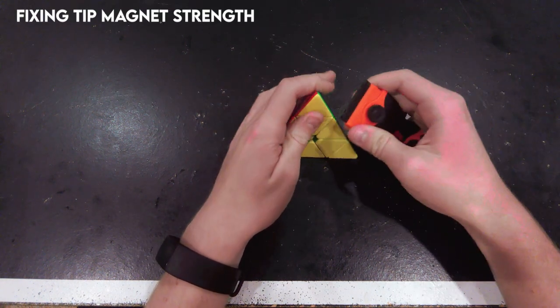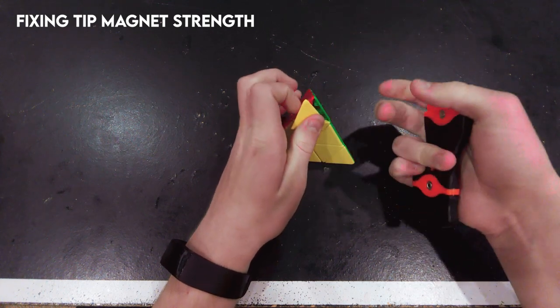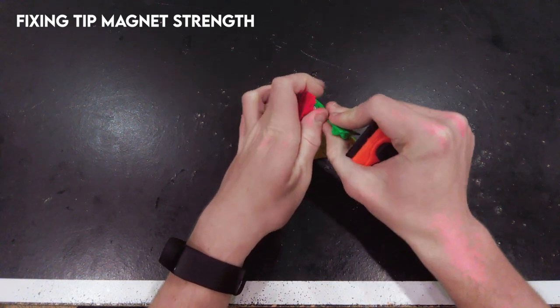The first thing we need to do is remove the tips. This is very easy, and the tips are just caps that separate into three pieces.